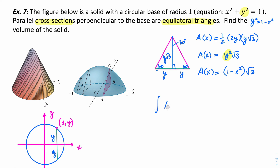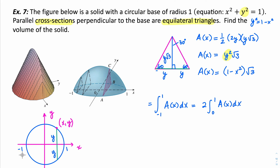So we're going to integrate A(x) dx. We need to figure out our limits of integration. Because this is a circle of radius 1, it goes from x = −1 to x = 1. We could integrate from −1 to 1, but another approach is to integrate from 0 to 1 and use symmetry to double that value. So the integral from −1 to 1 equals twice the integral from 0 to 1 of A(x) dx, due to the symmetry of the base.